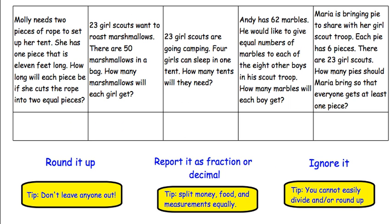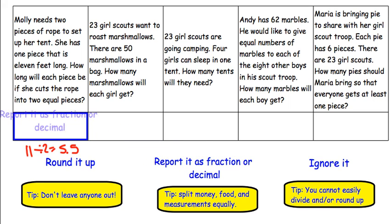In the following five examples, we are going to decide if the situation calls for rounding up the remainder, reporting the remainder as a fraction or decimal, or ignoring the remainder. Question 1 says: Molly needs two pieces of rope to set up her tent. She has one piece that is 11 feet long. How long will each piece be if she cuts the rope into two equal pieces? 11 divided by 2 would be 5.5. So we are going to be reporting this as a fraction or decimal. Our hint here was measurement — things that require measurements to be split up equally are going to be reported as a fraction or decimal.